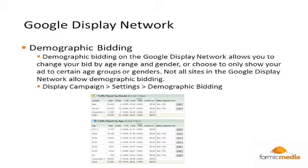Demographic bidding is pretty straightforward. You can serve your ads on the display network to sites that match up with different demographics — you've got genders and age groups. Not all sites actually allow this, so you have to check beforehand using Ad Planner. It's a good option if your clients specifically want to target certain demographics.